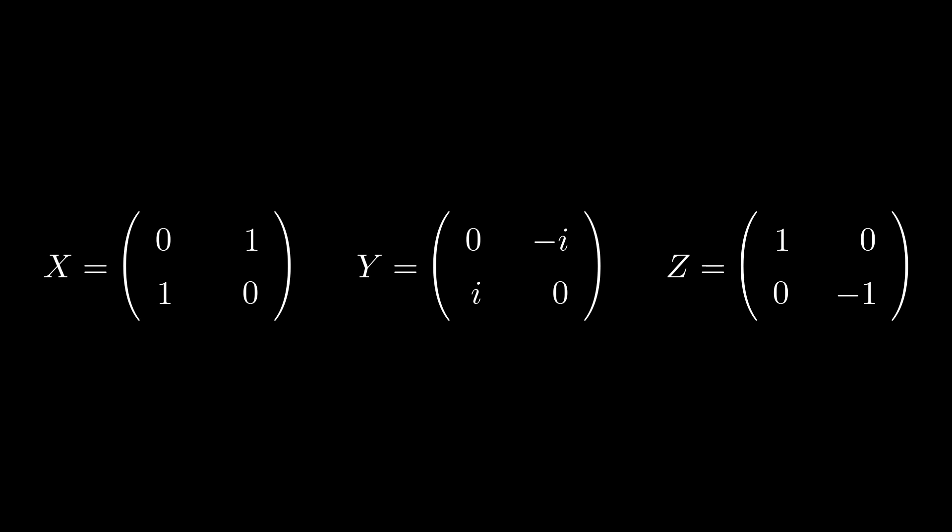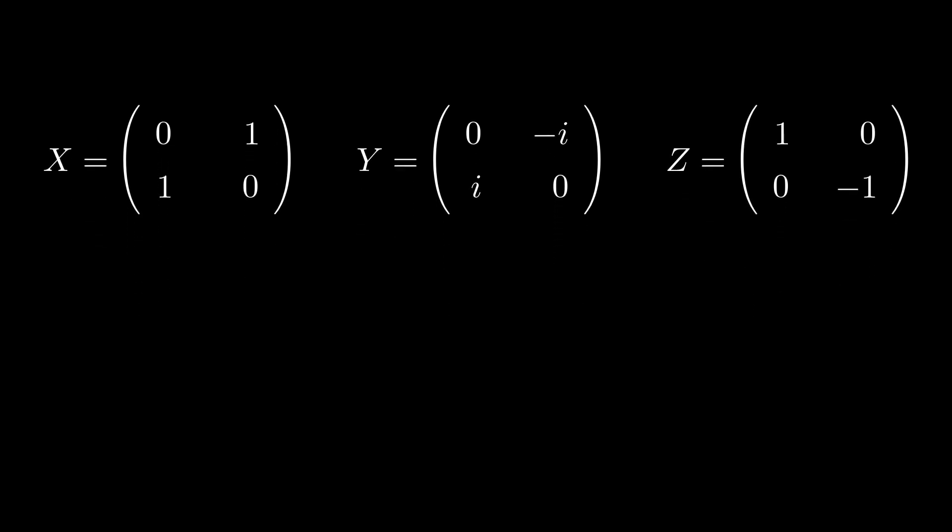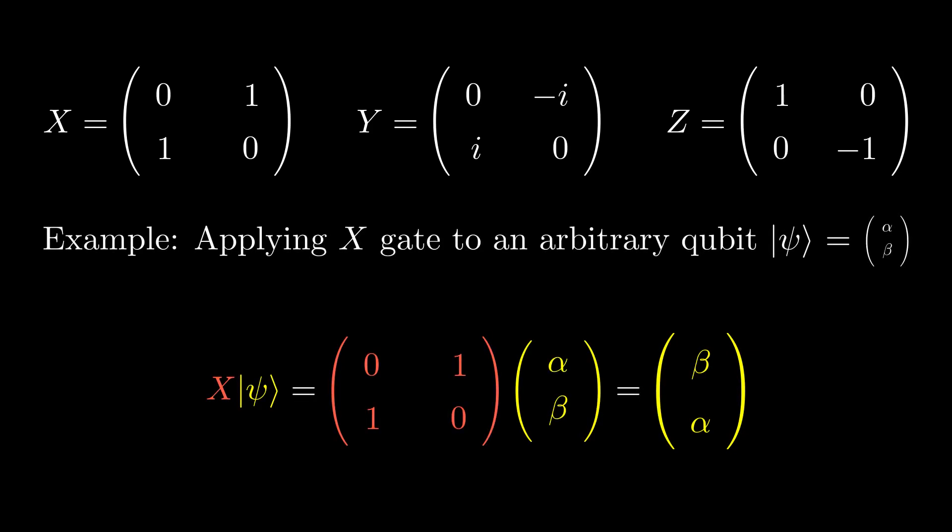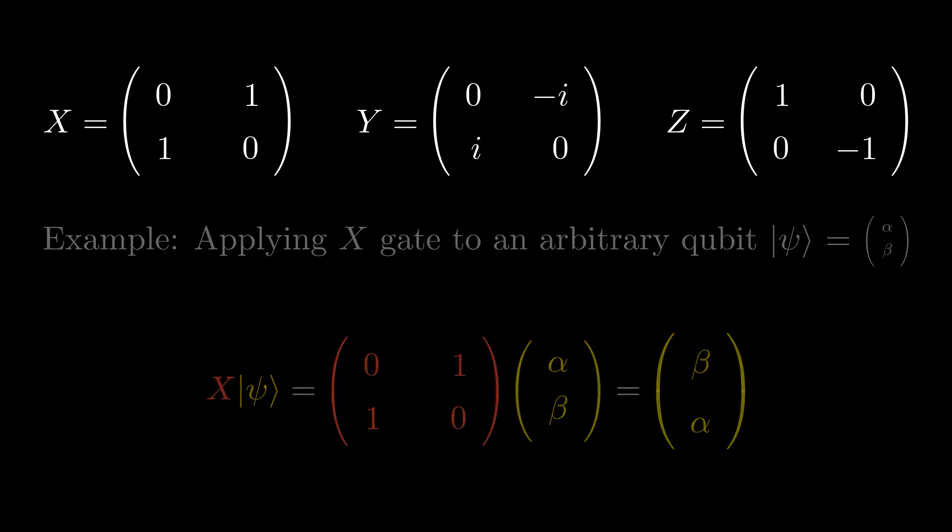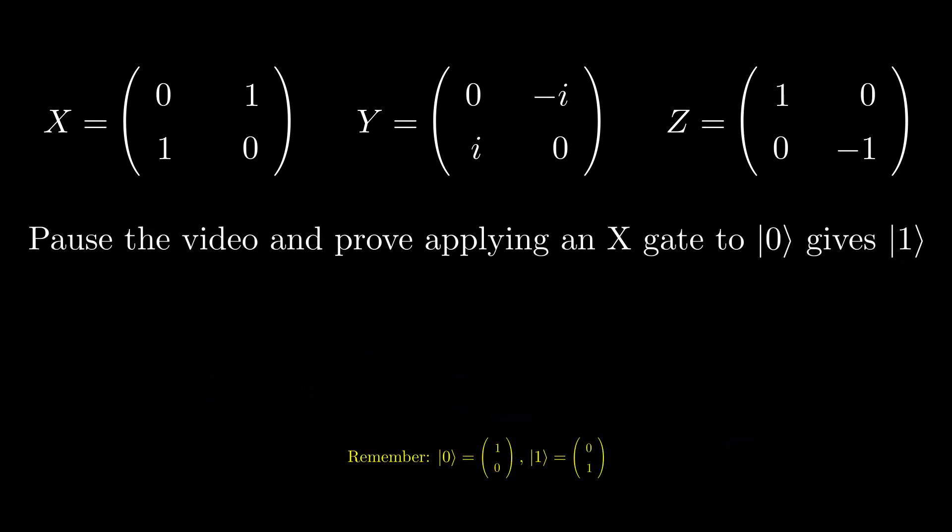Mathematically, to apply a gate to a qubit, we can multiply the matrix that represents the gate with the column vector of the qubit. Pause the video and prove that applying the X gate to the 0 state gives us the 1 state.